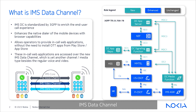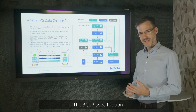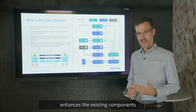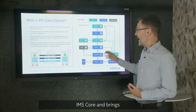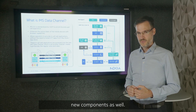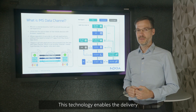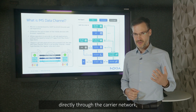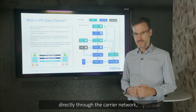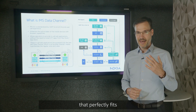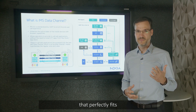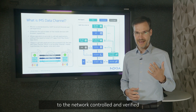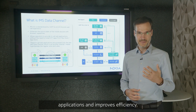IMS Data Channel is a revolutionary technology that allows the transfer of data over the IMS network. The 3GPP specification enhances the existing components of the IMS core and brings new components as well. This technology enables the delivery of real-time interactive applications directly through the carrier network, providing quality of service and perfectly fits network-controlled and verified applications, and improves efficiency.